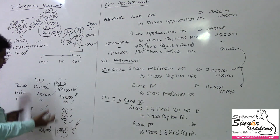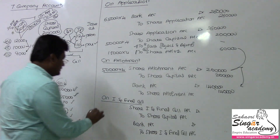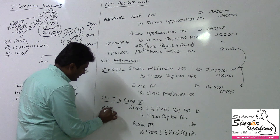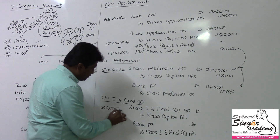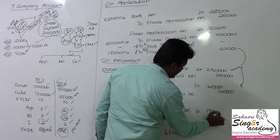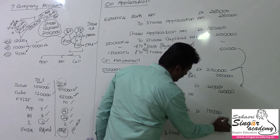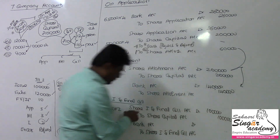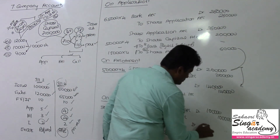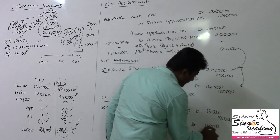For the first and final call: 2 rupees per share on 50,000 shares = 1,00,000 rupees. This is very simple — 1 lakh. The due entry and collection entry are straightforward. There is no default, so collection is comfortable at 1 lakh.